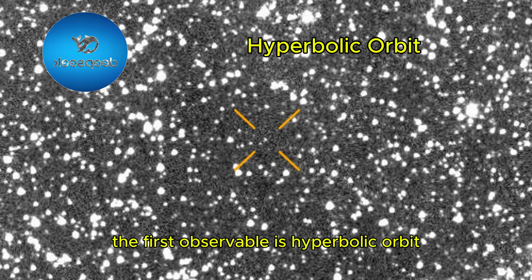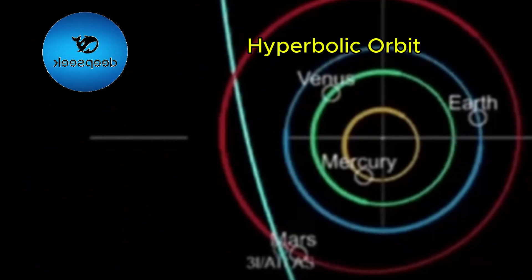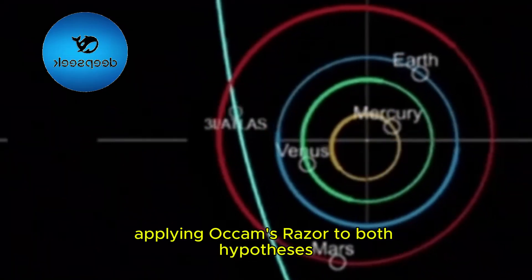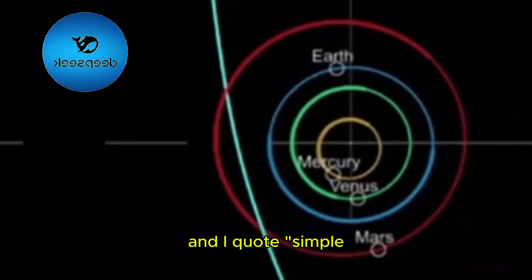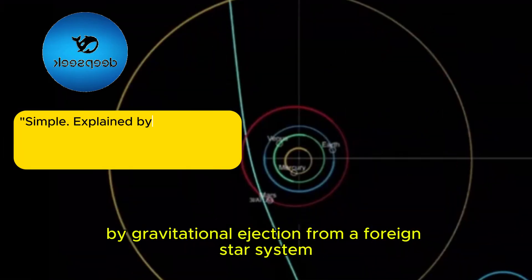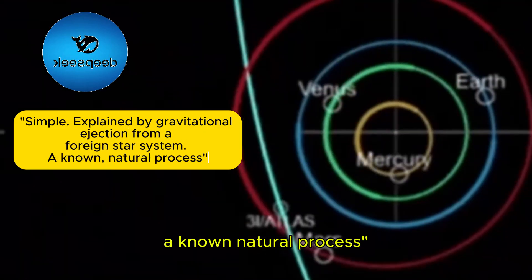The first observable is hyperbolic orbit. Applying Occam's Razor to both hypotheses, DeepSeek asserts under the NCH, quote: simple. Explained by gravitational ejection from a foreign star system. Unknown natural process.